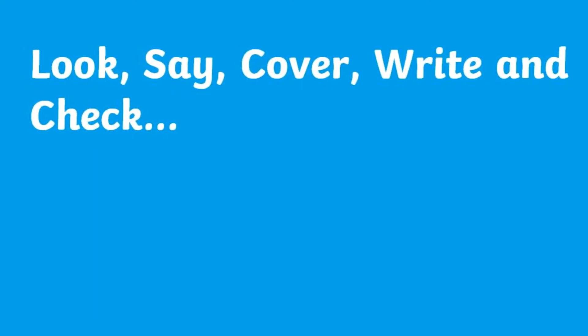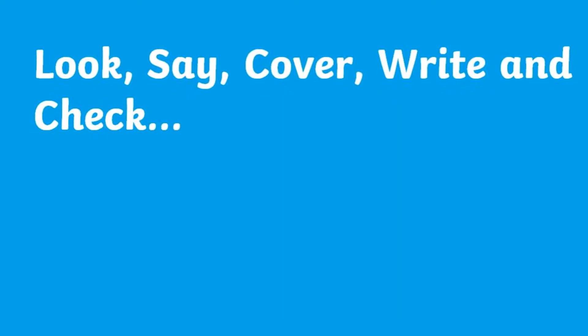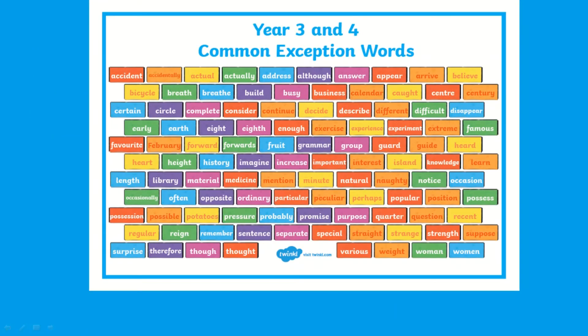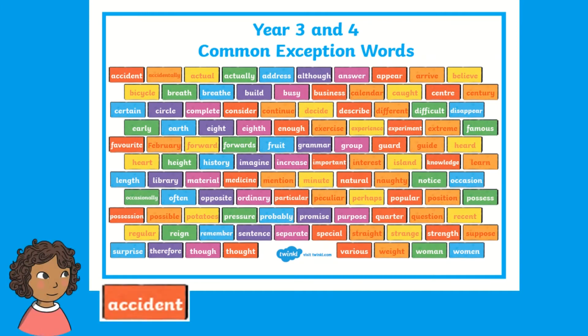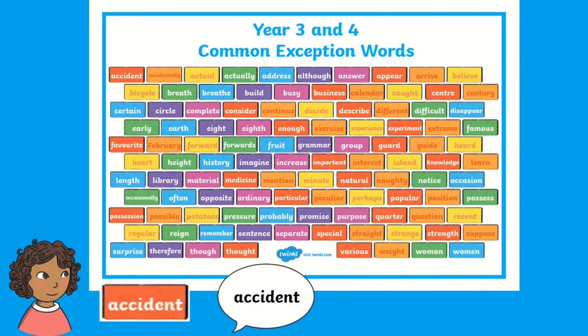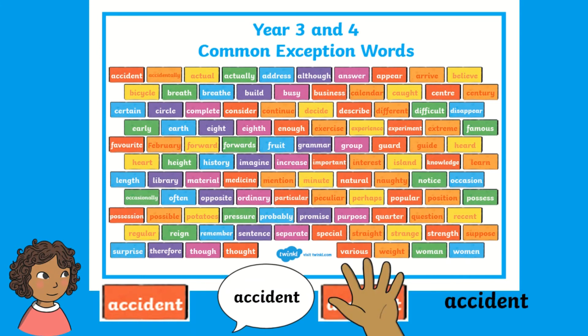If you want to get the most out of using these word maps, they can be used in a range of ways. Why not get children to practise their spellings using a look, say, cover, write and check activity? Using their word map, take a look at the spelling for 10 seconds, say it, cover the spelling they are focusing on and then try and spell it out, uncover, check and repeat.